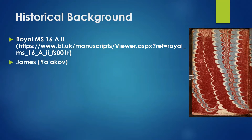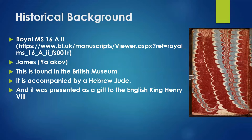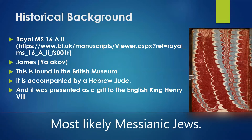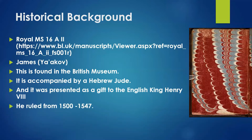One of the things you've got to look for when you're looking for James is you want to look for Yaakov. Yaakov is Jacob in Hebrew, and that's going to be important in a little bit. It was presented as a gift to the English king, Henry VIII, by some Sephardic Jews as a gift. Henry VIII ruled from 1500 to 1547, so we know exactly when this physically got into the hands of the British.